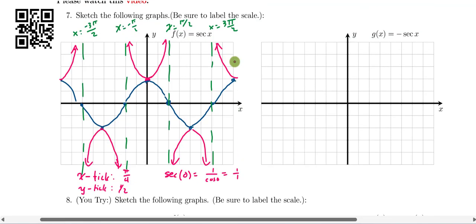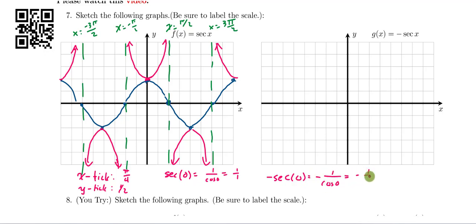And we can see that, for example, if I were to go ahead and evaluate minus the secant of 0, that would just be minus 1 over the cosine of 0, which is equal to minus 1 over 1, or minus 1. And so when we input a value of 0 into this new function, g of x, it's going to output not a 1.